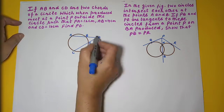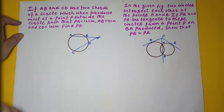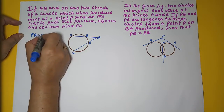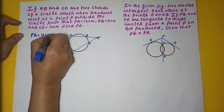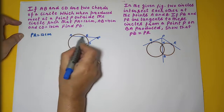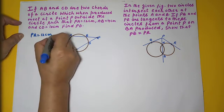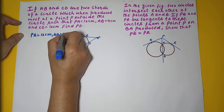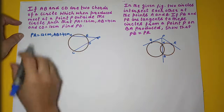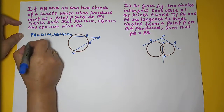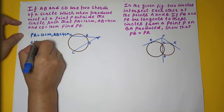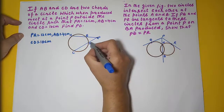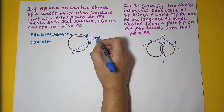We are given that PA is 12 cm, the length of AB is 4 cm, and the length of CD is 10 cm. We need to calculate the length of PD.